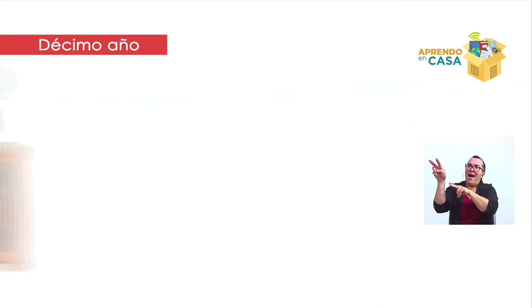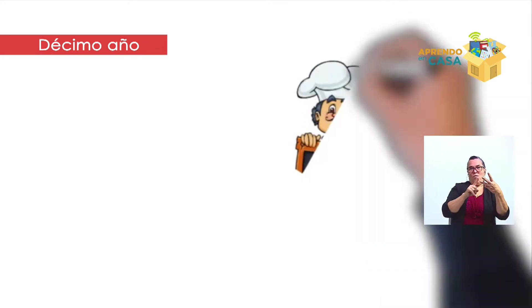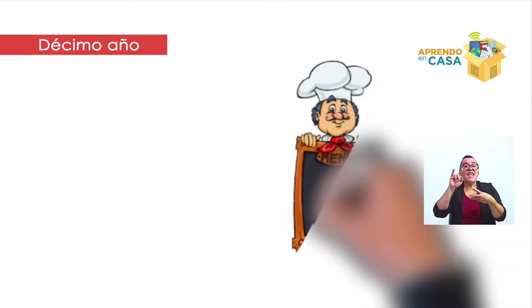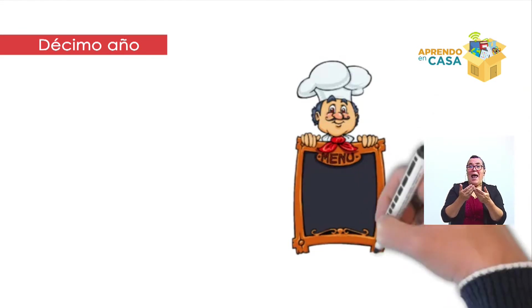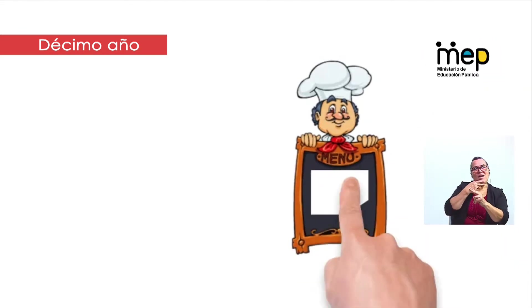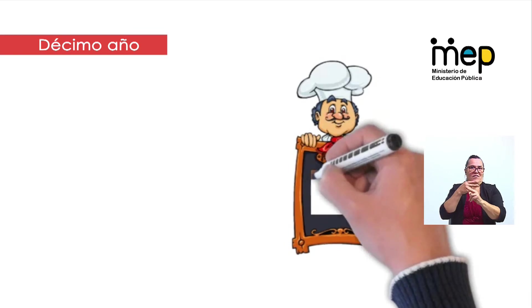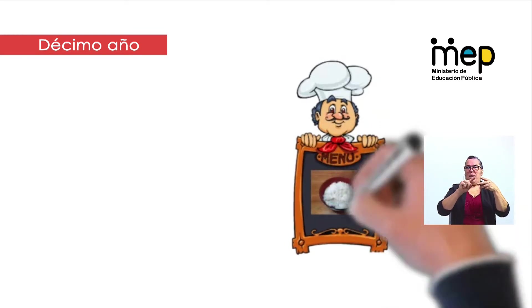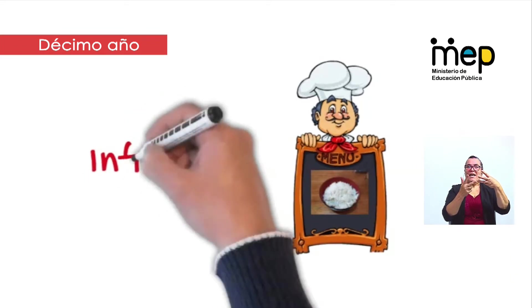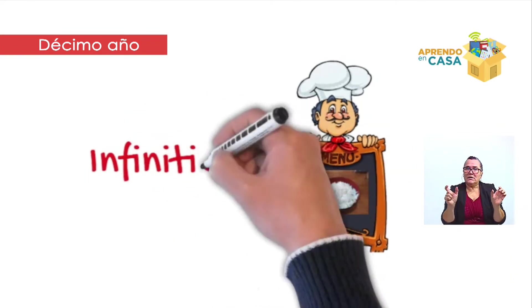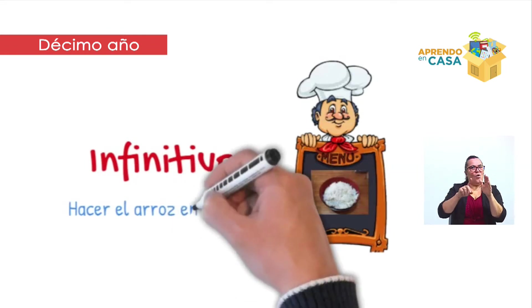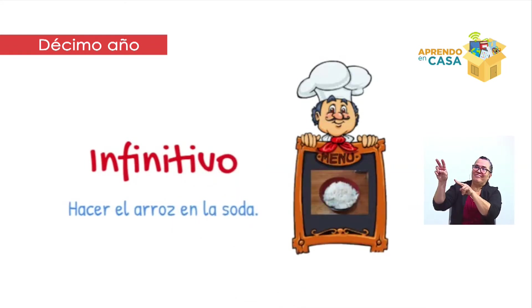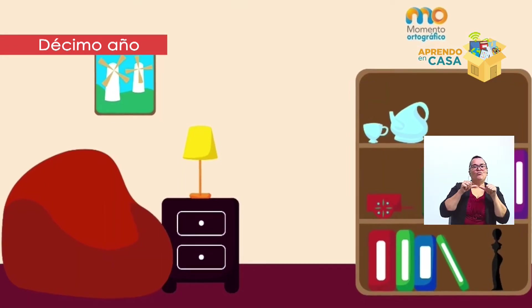Y por último, el infinitivo. Entre sus funciones tenemos la de dar nombre a los verbos. Además, sus terminaciones -ar, -er, -ir indican la primera, la segunda y la tercera conjugación. Estas son importantes para el tema que vamos a desarrollar hoy. Volvamos entonces a la clase para continuar nuestro tema.